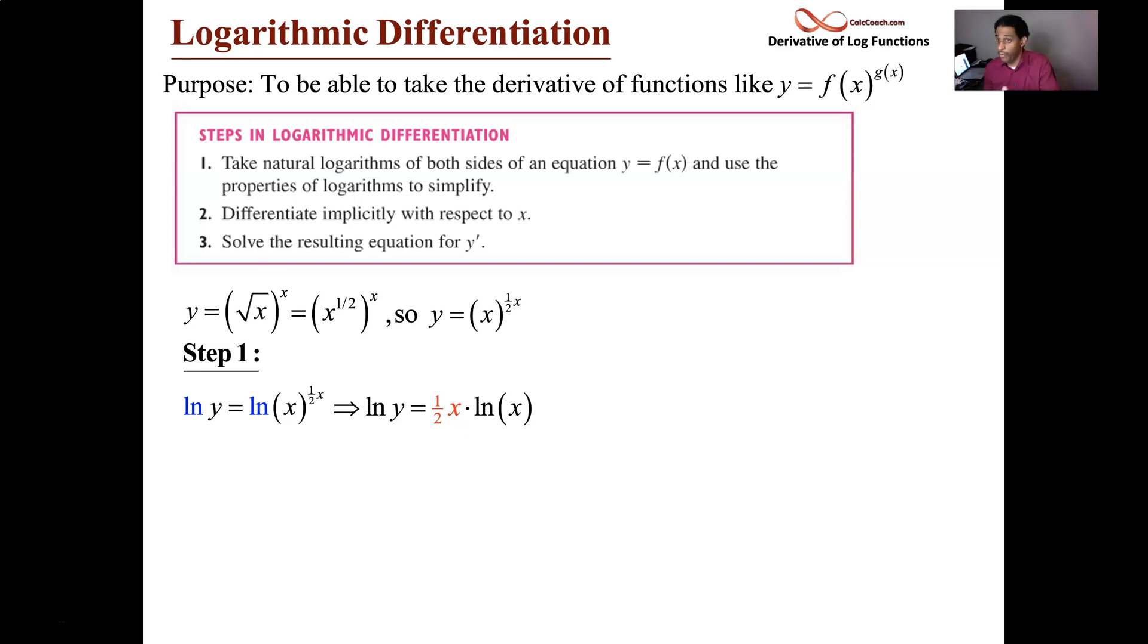And now we execute implicit differentiation. Derivative of the left, derivative of the right. Whenever we encounter a term with y in it, we think its derivative, but we put the y prime on it, multiply it, because of the chain rule.